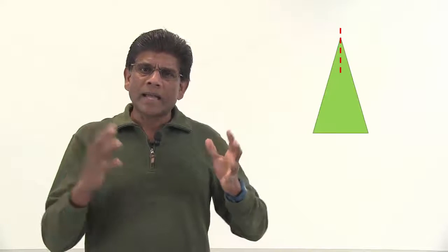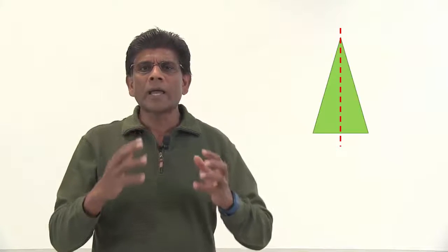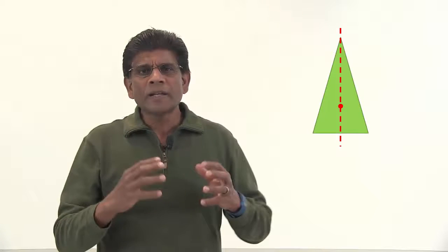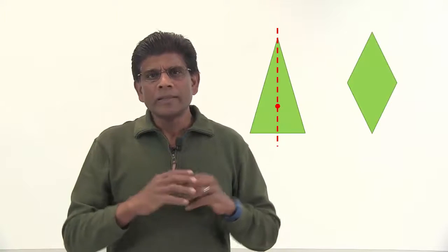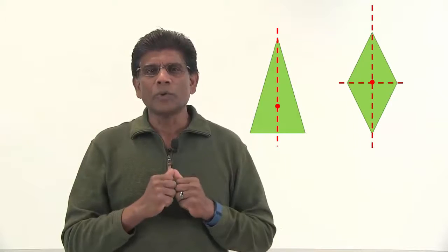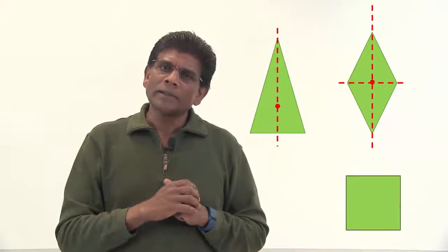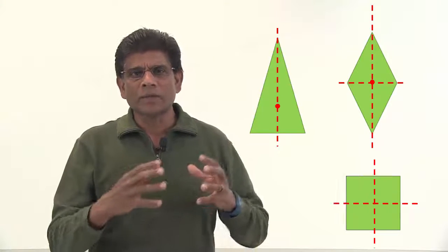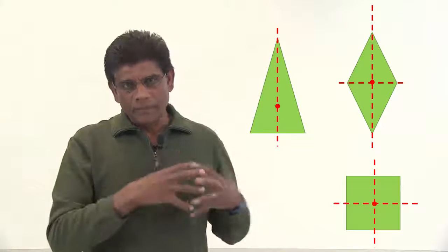It is easy to find the centroid of simple shapes. If an object has an axis of symmetry, then the centroid will always lie on that axis. If an object has two axes of symmetry, then the centroid will be at the intersection of those axes. For a square, the centroid is always at the intersection of two axes of symmetry, which is right in the middle of the shape.